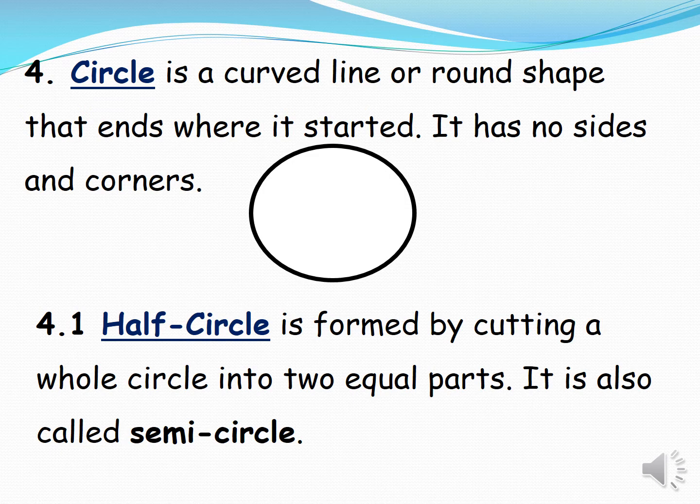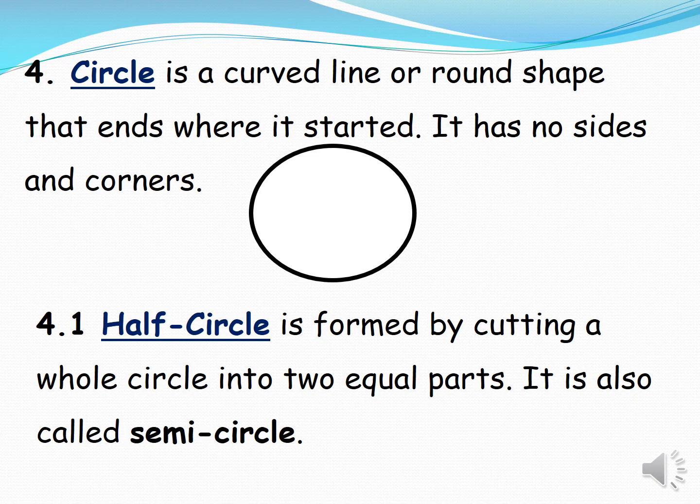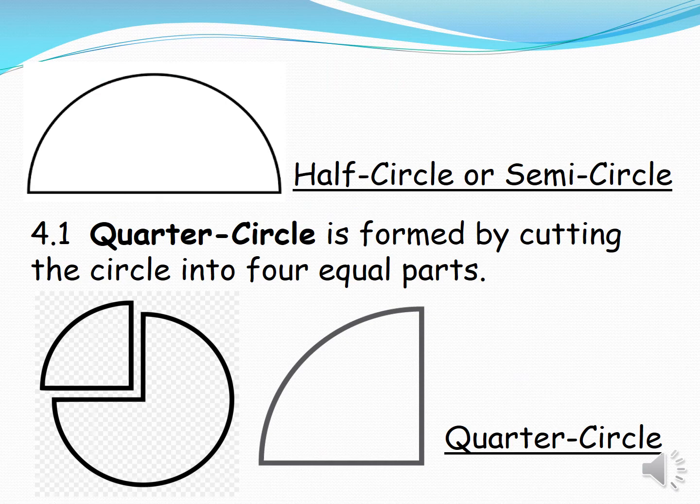Next is what we call the half circle. Half circle is formed by cutting a whole circle into two equal parts. It is also called semi-circle. So this is an example of half circle or semi-circle.